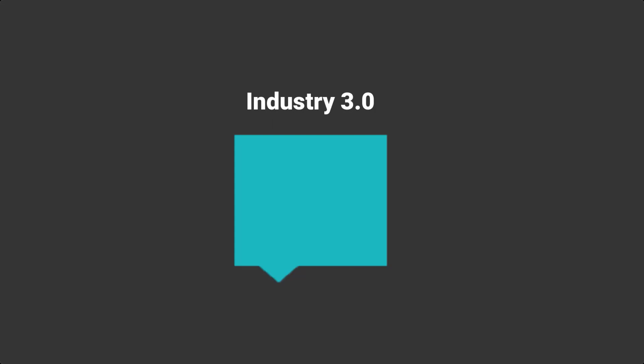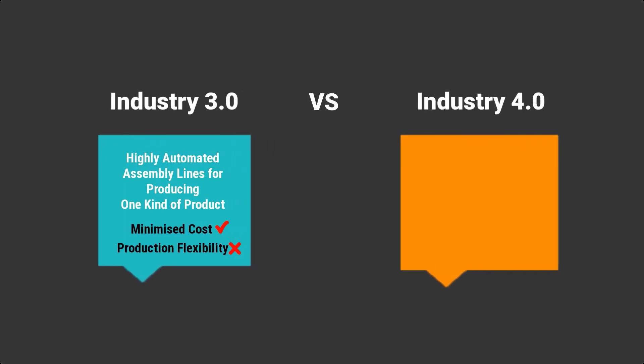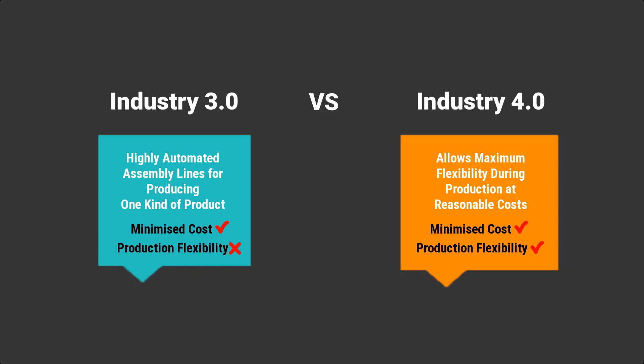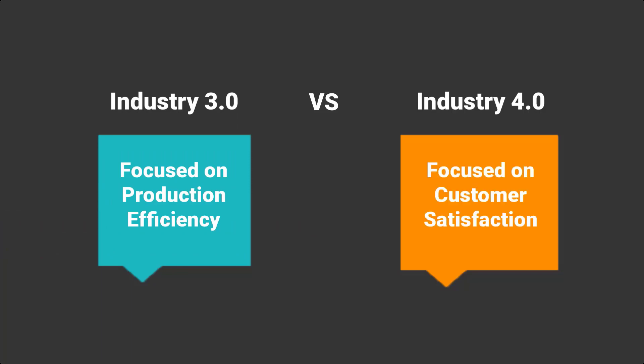The fact of the matter is, traditional mass production, otherwise known as Industry 3.0, sought to minimize production costs by using highly automated assembly lines designed for producing one kind of product with strictly defined characteristics and perhaps with a small number of variations. However, as much as that does reduce the cost of production significantly, it seriously restricts production flexibility. On the other hand, mass customization using Industry 4.0 technologies allows maximum flexibility during production at reasonable costs. Simply stated, traditional mass production or Industry 3.0 is focused on production efficiency, whilst Industry 4.0 is focused on customer satisfaction.